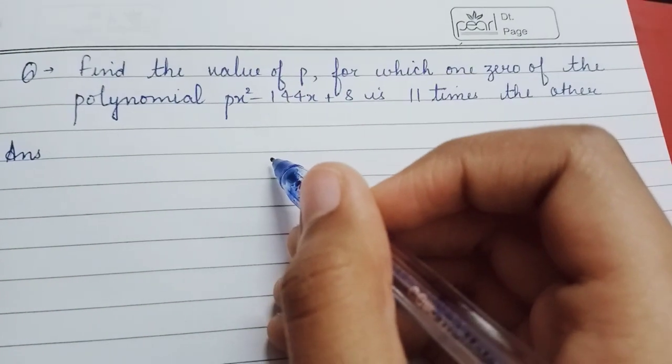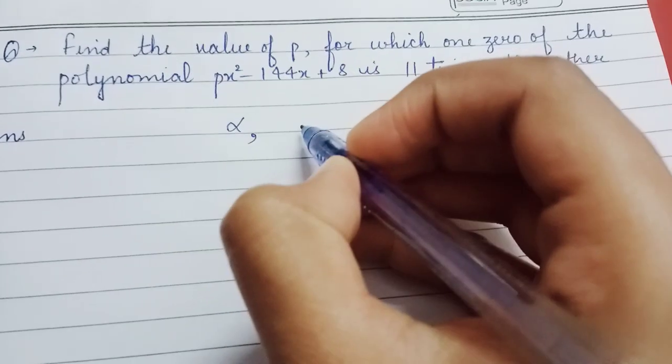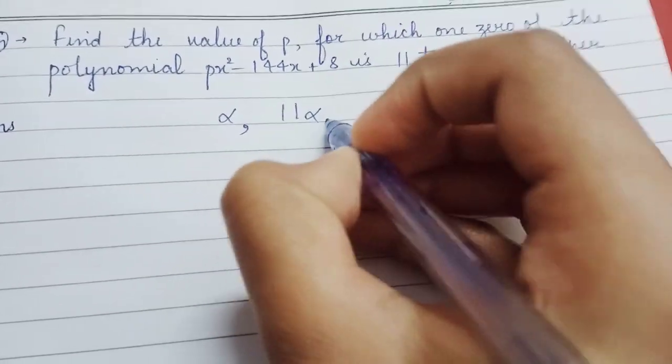So one zero is 11 times the other. Let one zero be α, then the other zero will be 11α.